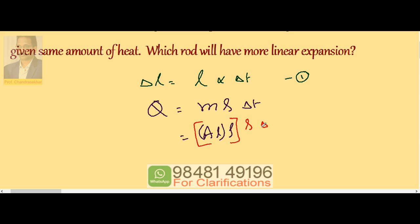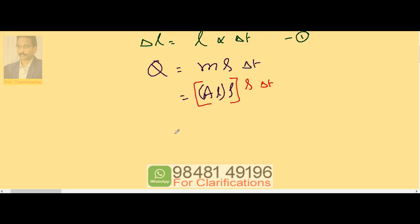Specific heat times delta T. From this we can write delta T as Q divided by A L rho S. Substitute this into the first equation.